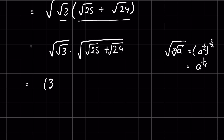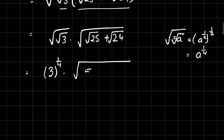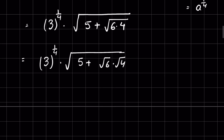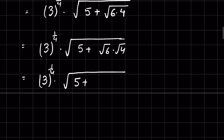So this becomes 3 raised to the power 1/4, times (√25 + √24). Since √25 = 5, and √24 can be written as √(6×4), we apply the product rule to get √6 × √4, all still under the outer expression: 3^(1/4) × (5 + √6 × √4).